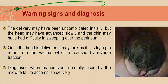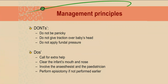Regarding warning signs and diagnosis: the delivery may have been uncomplicated initially, but the head may have advanced slowly and the chin may have had difficulty sweeping over the perineum. Once the head is delivered, it may look as if it is trying to return into the vagina — this is called the turtle sign, which is the typical sign for shoulder dystocia. Diagnosis is confirmed when maneuvers normally used by the midwife fail to accomplish delivery.